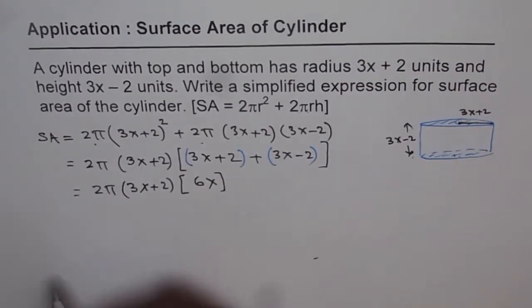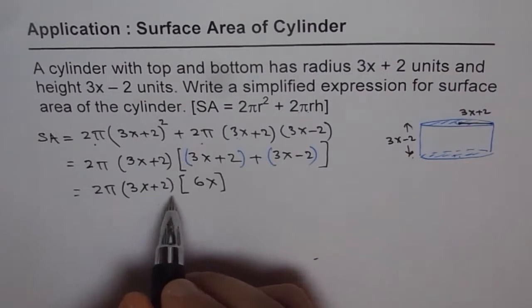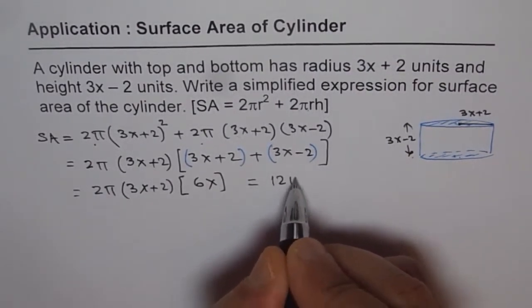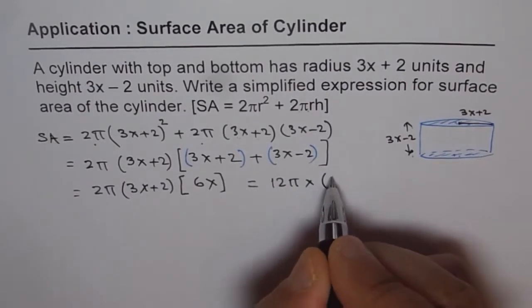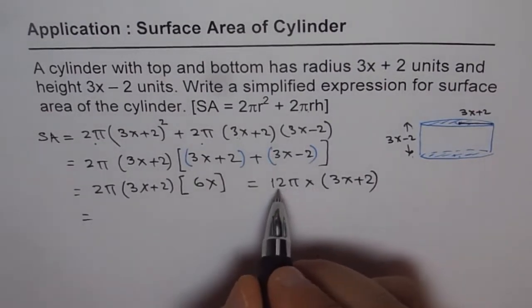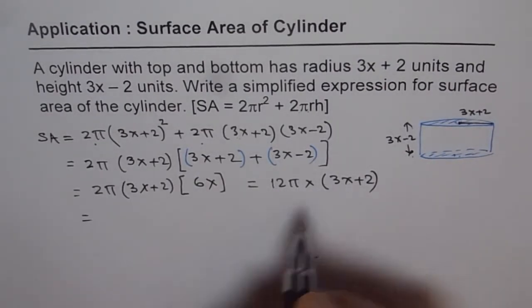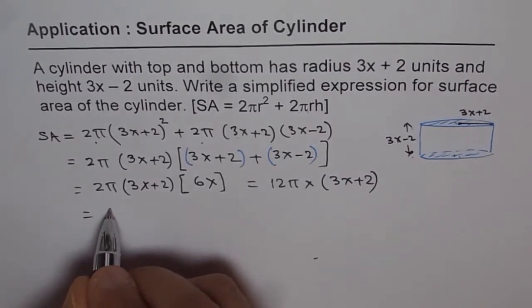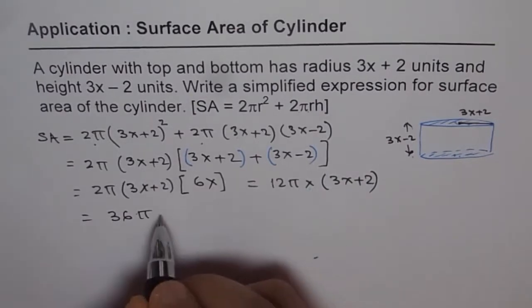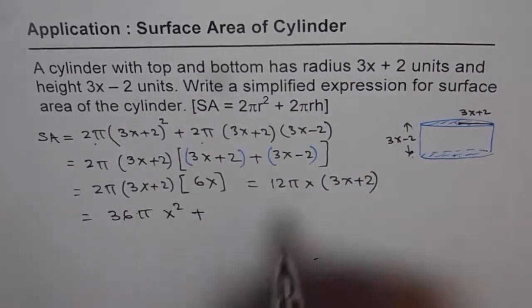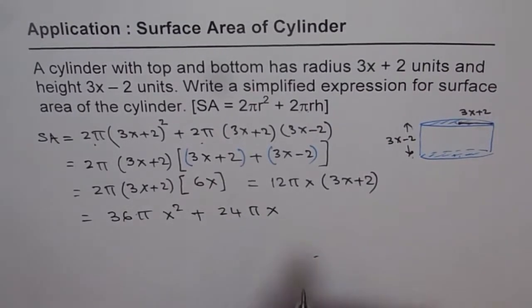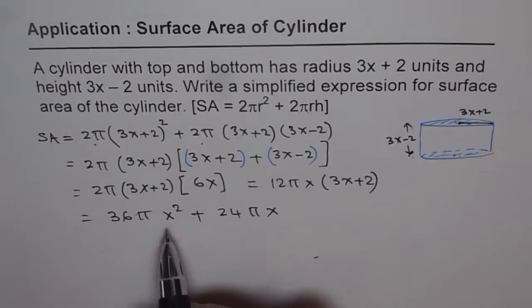So now we can multiply this by 6x first and then expand. So we get here 6x times 2 is 12. So 12 pi x times 3x plus 2. And now expanding this, 12 pi x times 3x. 12 times 3 is 36. 36 pi and x squared, plus 12 pi x times 2 is 24 pi x.